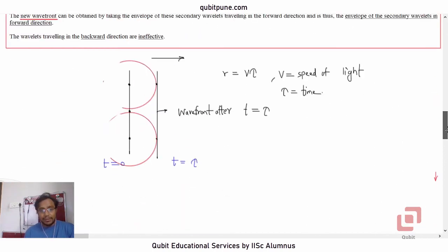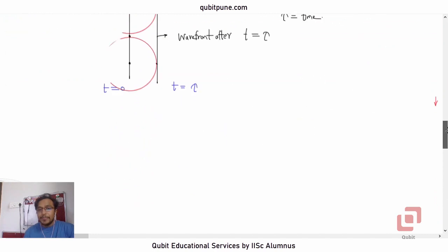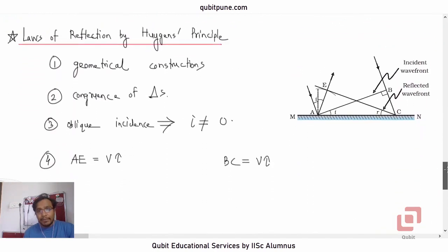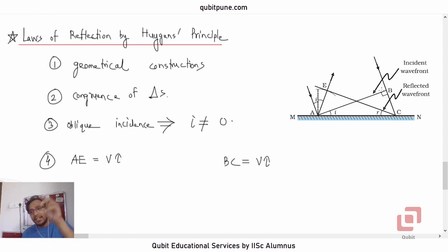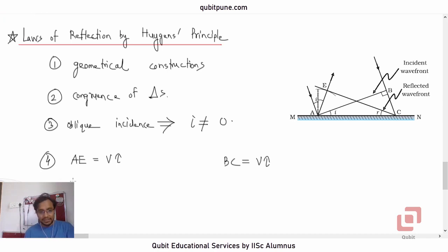By the logic of enveloping the wavelets, at the moment the radius of the secondary wavelet emitted by A is v·tau, the radius of the secondary wavelet emitted by C will be zero — because it has just reached M. So to draw the envelope, we draw a line from C tangential to this circular arc, meaning CE is tangent to arc AE.